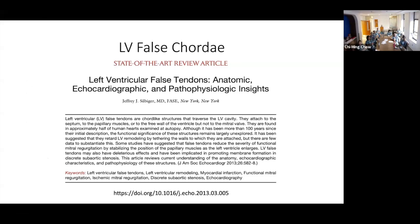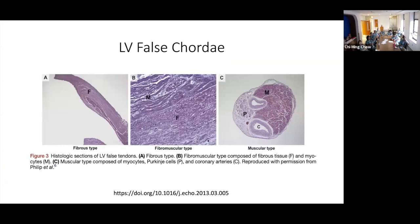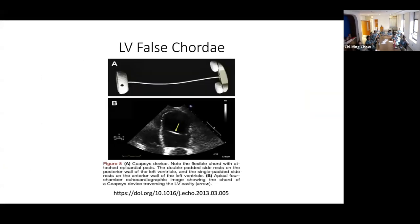I'd like to refer to an article I read in 2018 about the types of false chordae — they give five types according to attachment, and types according to consistency: fibrous, muscular, and fibromuscular. There is no clear answer yet, but they suggest false chordae may help in remodeling, in conduction of electrical activity — which is why sometimes there is less QRS widening — and in reducing remodeling after ischemic events or with MR. A device was even originated from that idea.